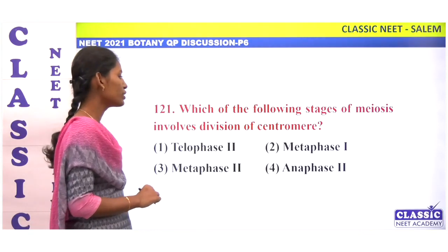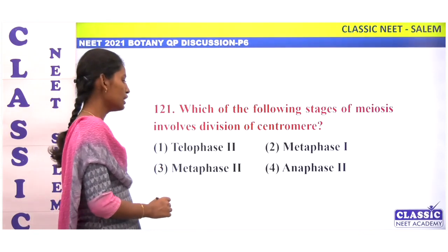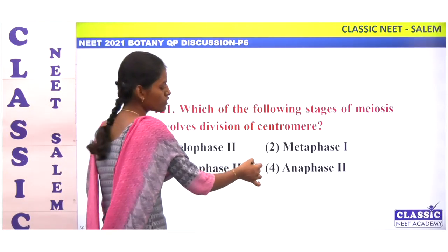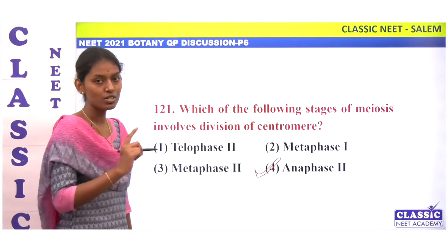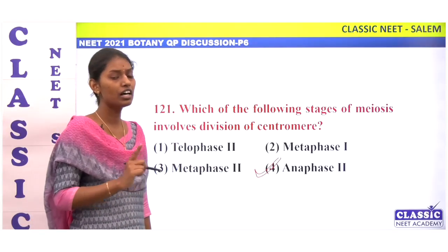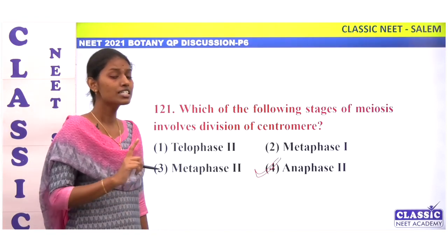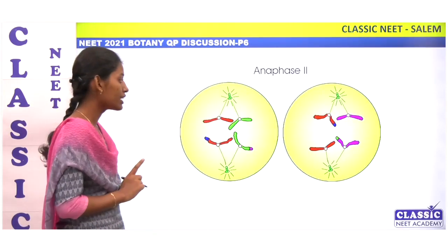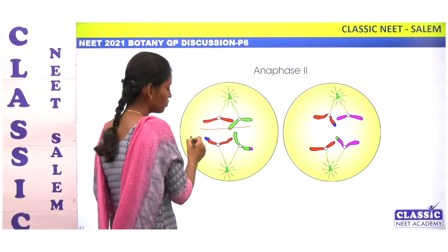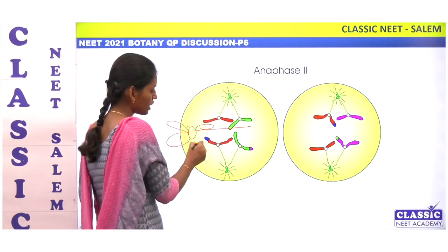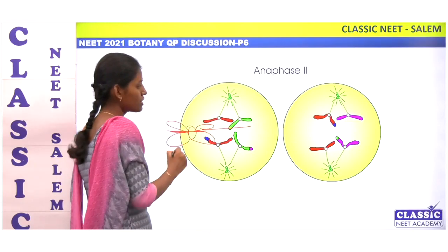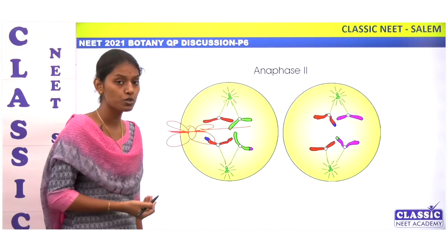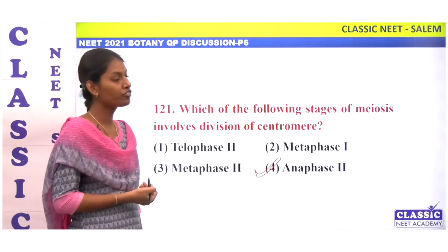Which of the following stages of meiosis involves the division of centromere? Options: telophase, metaphase 1, metaphase 2, anaphase 2. Division of centromere takes place in anaphase 2, similar to mitosis anaphase — chromatids move towards opposite poles. Option 4.